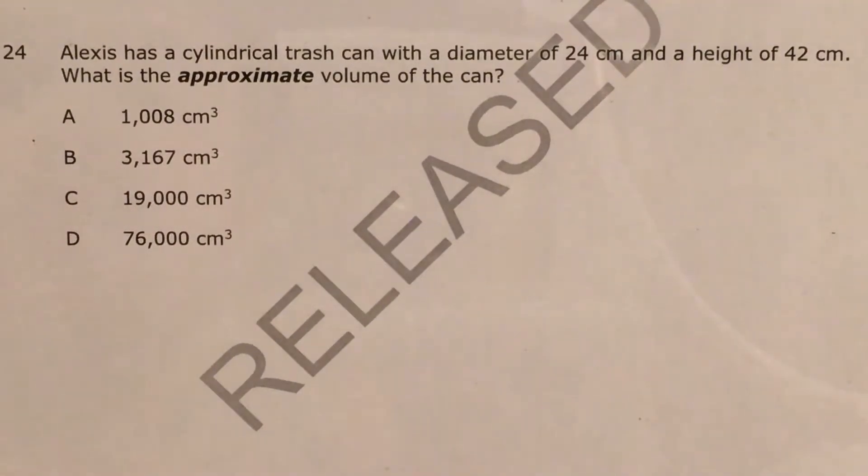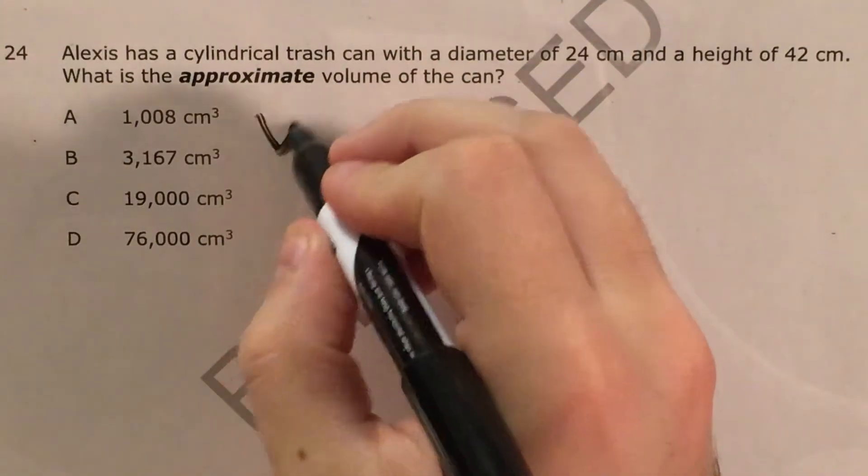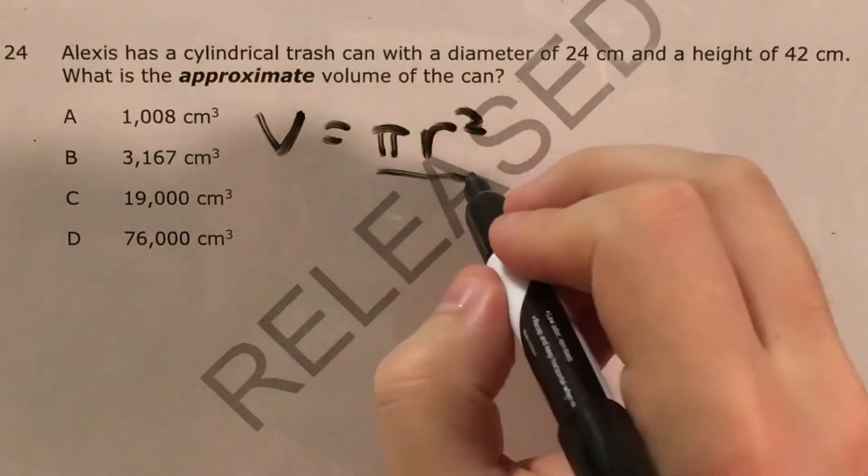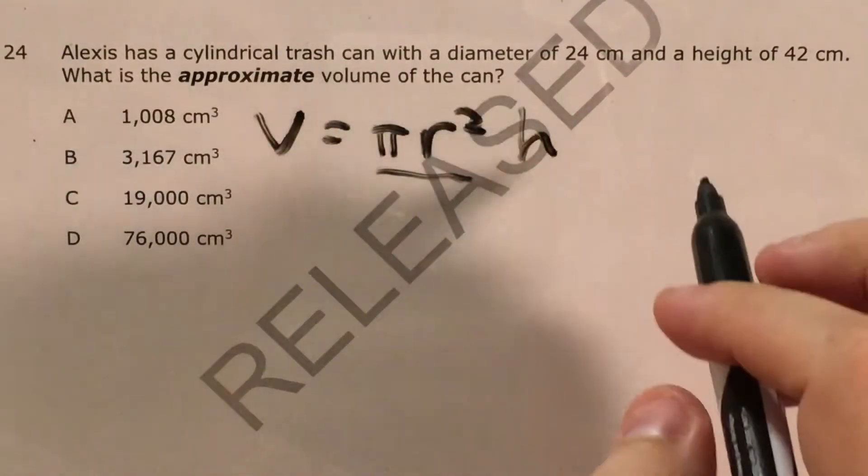So let's go ahead and start by writing down the formula for the volume of a cylinder. The volume of a cylinder is pi times the radius squared, which you should recognize as the area of a circle, times height.